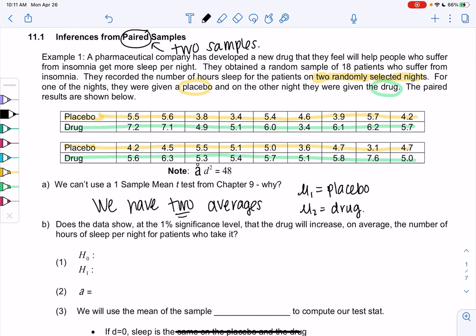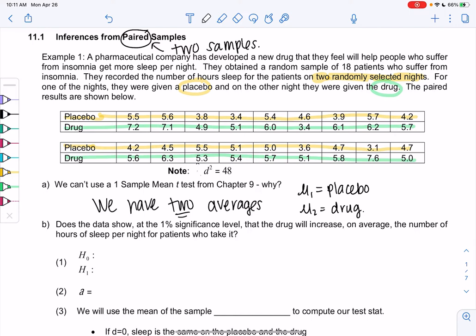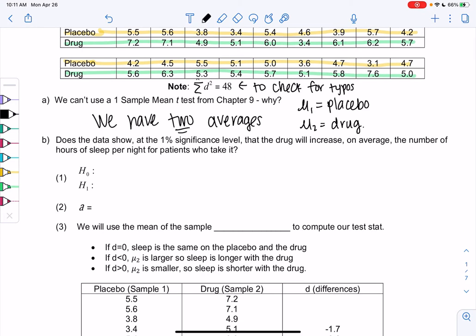d is going to stand for differences. This is that sum of d squared. We'll use this to check for typos. Does the data show at one percent significance, so my alpha is 0.01, that the drug will increase on average the number of hours of sleep per night for patients who take it?